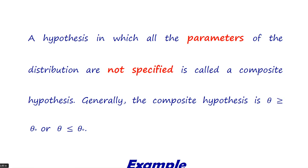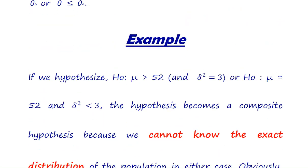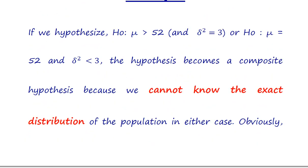Composite hypothesis will be stated as theta greater than theta naught, where theta is the parameter and theta naught is any value of the parameter, or theta less than theta naught. Here we discuss an example of composite hypothesis.